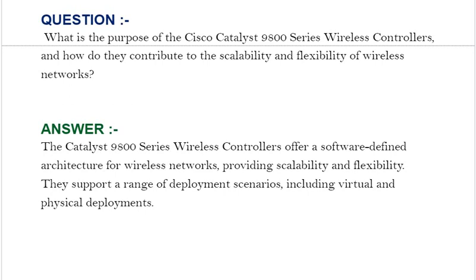Our next interview question is: what is the purpose of the Cisco Catalyst 9800 series wireless controllers and how do they contribute to the scalability and flexibility of wireless networks? Your answer should be: the Catalyst 9800 series wireless controllers offer a software-defined architecture for wireless networks, providing scalability and flexibility. They support a range of deployment scenarios including virtual and physical deployments.